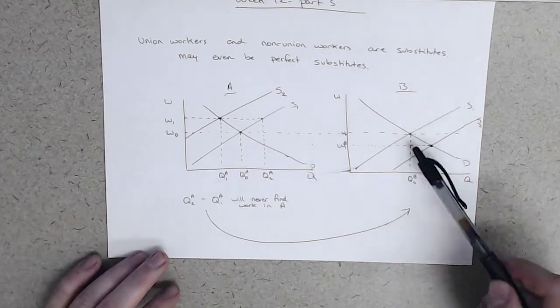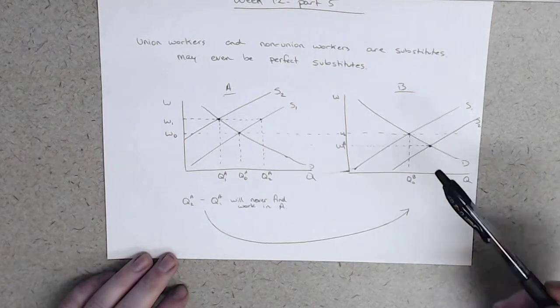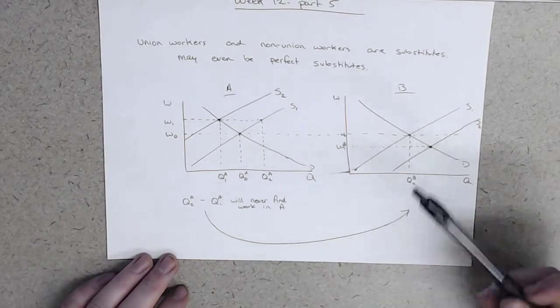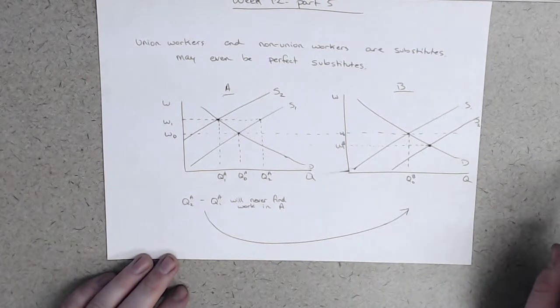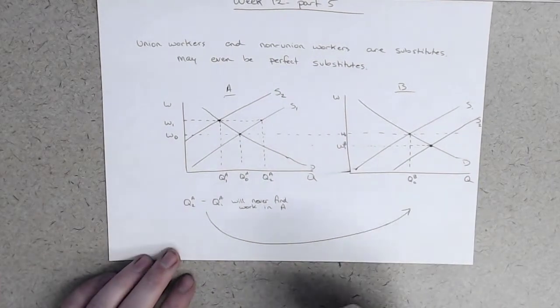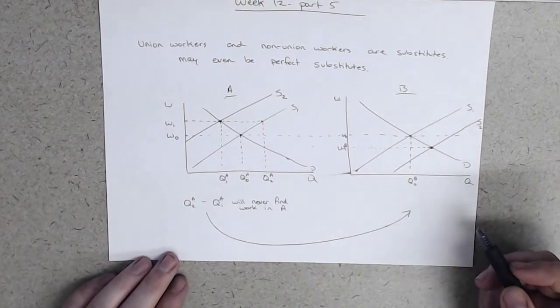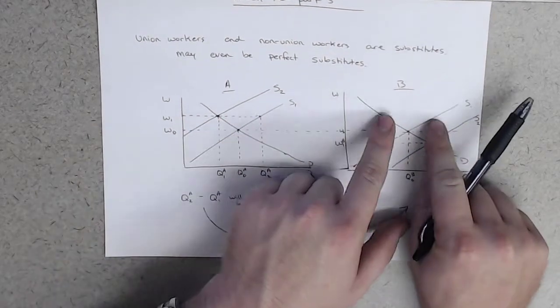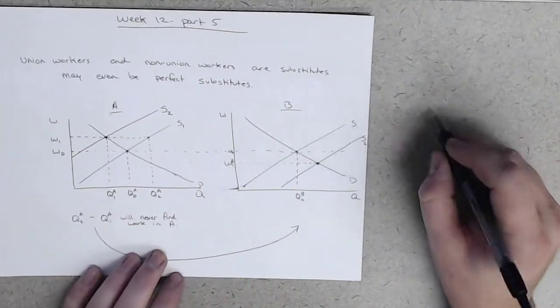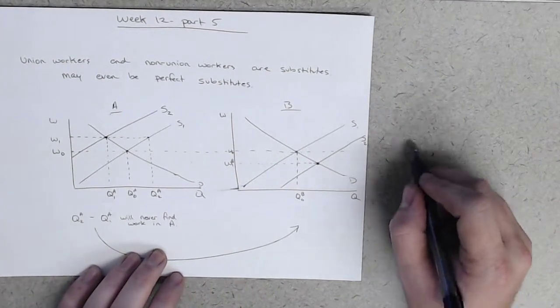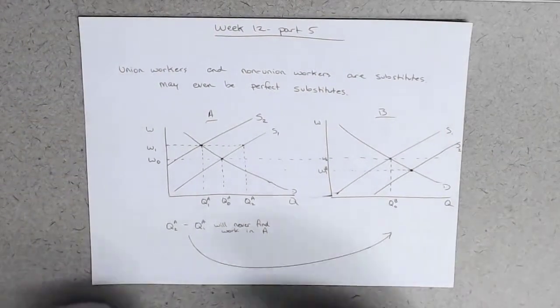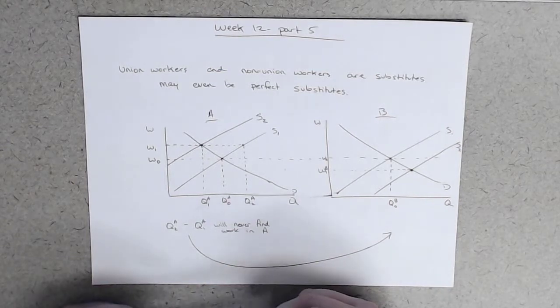And so this might make it seem like what we need to do is have the workers in market B unionize, but then there would just be a third sector where we would see not only these workers go, but also Q-2B minus Q-1B, the analogous over here, those workers would also go. And so in what we could call, you know, labor market C, if I were to draw it, we'd see an even bigger increase in the supply of labor and a further decrease in the wages of those workers. And so what we end up seeing is the presence of a union actually end up causing workers in other labor markets to earn fewer dollars.